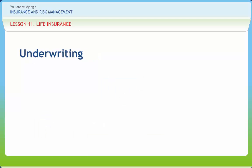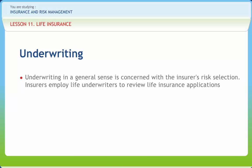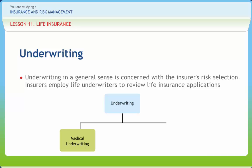Life insurance underwriting is about risk assessment, just as life insurance is about risk management. The premise for underwriting does not arise from the mere existence of risk, but from the reality that all risks are not equivalent. Underwriting in a general sense is concerned with the insurer's risk selection. Insurers employ life underwriters to review life insurance applications. Life insurance underwriting is based on the hazards presented by an applicant. Physical hazards, moral hazards and occupational hazards are just some of the risk areas examined. Medical underwriting can take place with or without medical examinations. Sometimes the underwriter requires a combination of warranties and representations from the applicant and medical tests, depending on the applicant's age and coverage sought.